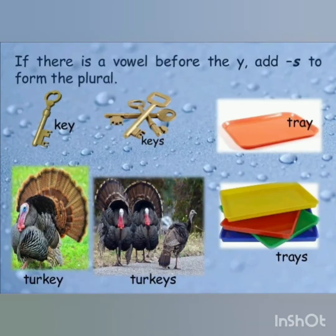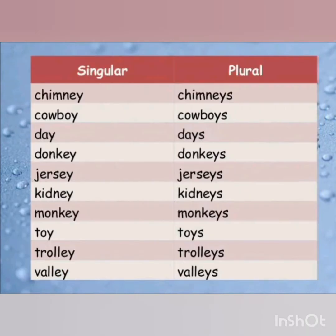The next rule is related to a noun which has a vowel and a Y at the end. Here, we will just add S to change it into plural form. For example: key becomes keys, tray becomes trays, day becomes days, donkey becomes donkeys, toy becomes toys, monkey becomes monkeys.